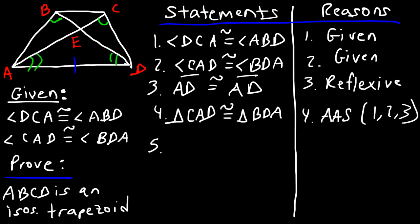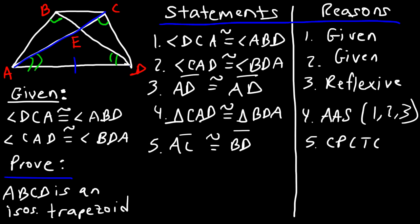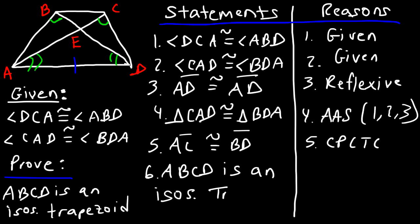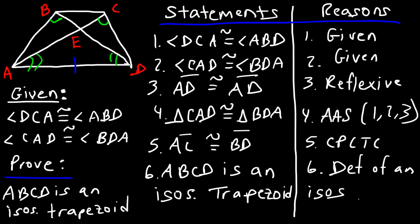Statement 5 — AC is congruent to BD, based on CPCTC. This diagonal is congruent to that diagonal. Once we've shown the two diagonals are congruent, we make the final statement: ABCD is an isosceles trapezoid. The reason is the definition of an isosceles trapezoid.